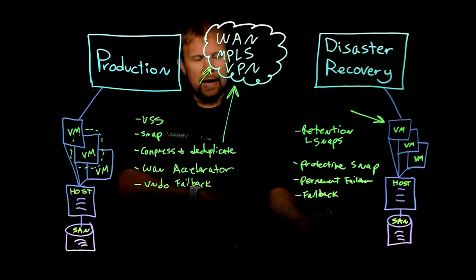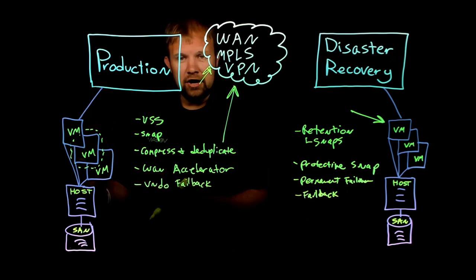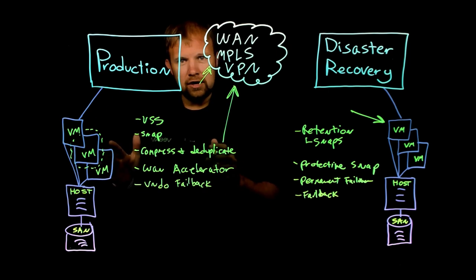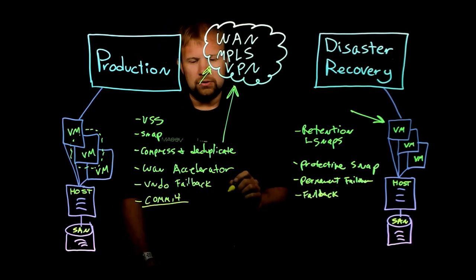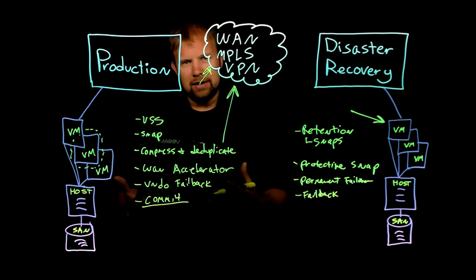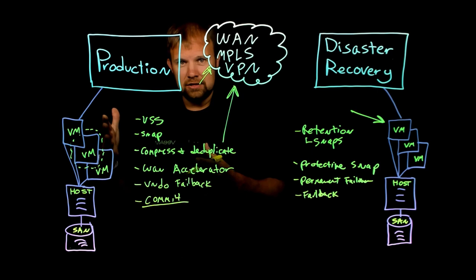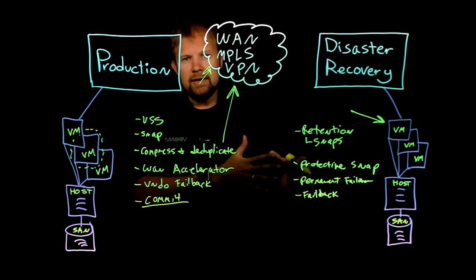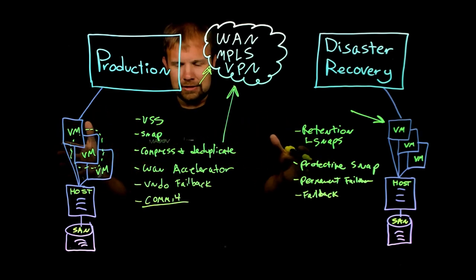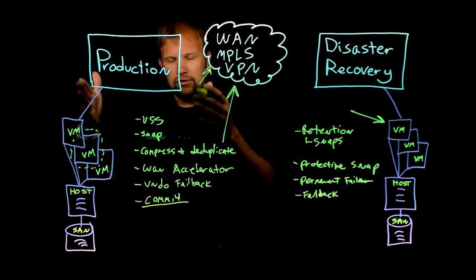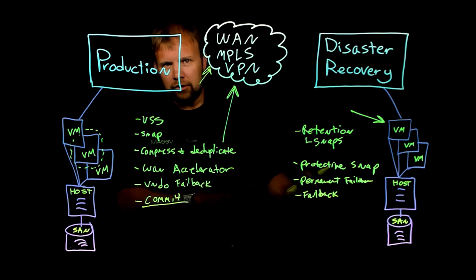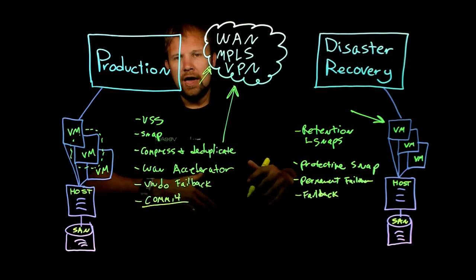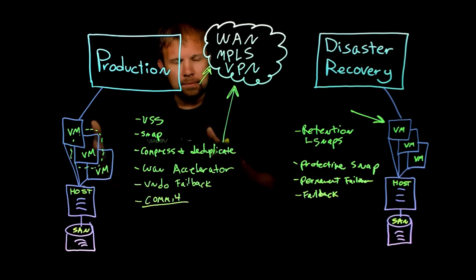If you don't need to undo the failback — let's say everything went according to plan, you're running at production, services are starting and running properly — the final step is to commit the failback. This is crucial because if you don't commit the failback, you're still running in one of those limbo states with protective snaps still on the DR side. Once you've verified everything is running, make sure you commit the failback, which will remove all the protective snapshots on your replicas and bring you back to an operational state at the production location.